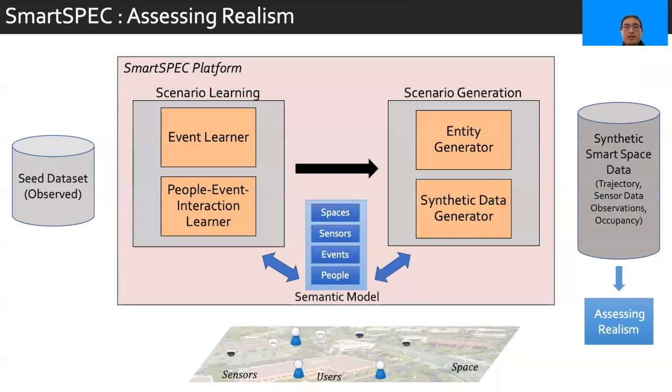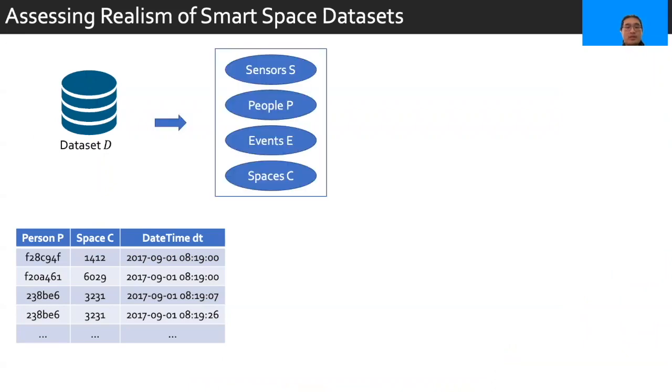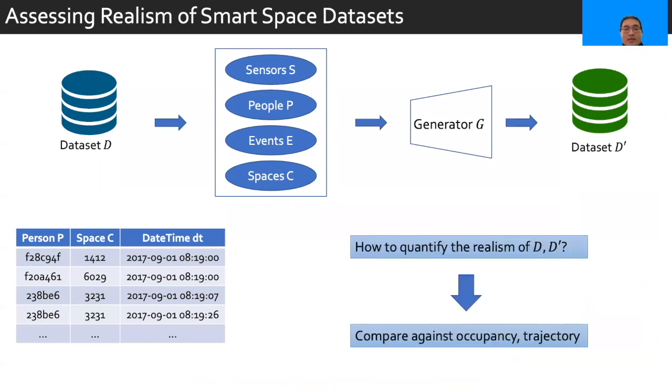So given this dataset, is the synthetic dataset faithful to reality? How do we assess this to realism? We're going to address these questions next. Let's consider what we've done so far. We first had a dataset D consisting of three tuples as shown, from which the concept of sensors, people, events, and spaces were obtained. At a high level, this was then fed into a generator G to generate a dataset which we now call D prime. And so, to assess realism, we first need to quantify the distance between D and D prime, and this is going to be done with respect to occupancies and trajectories.